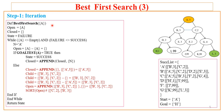Let us now apply this algorithm on the given graph. The start node is A, closed is empty, and state is failure. Open has A, so it is not empty and state is not success — both conditions are true, so we enter the while loop. The front node A is picked and removed from open, leaving open empty. Goal test checks whether A is goal — A is not goal, so it returns false, and we go into the else part. A is appended to closed.